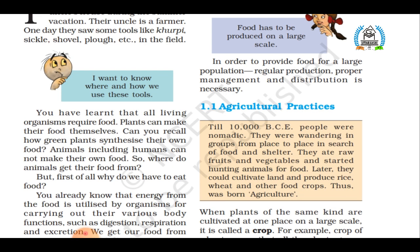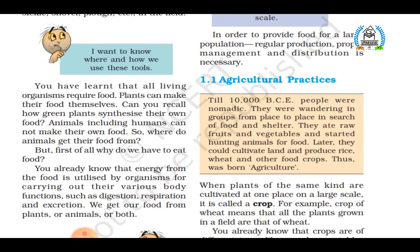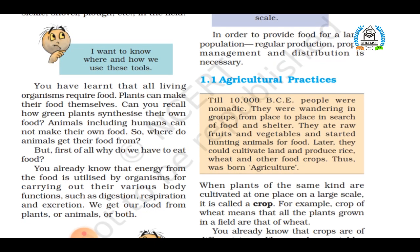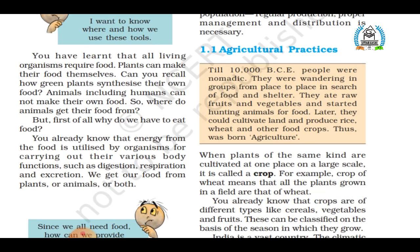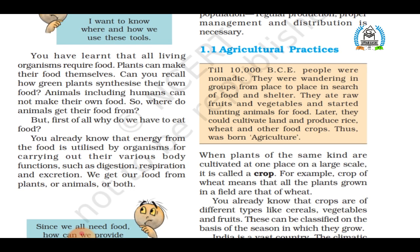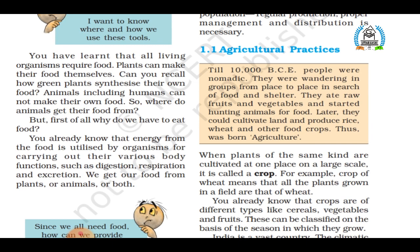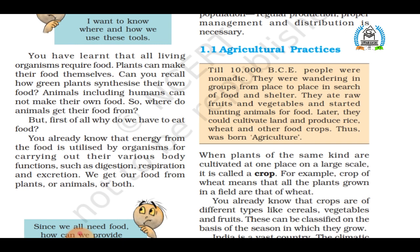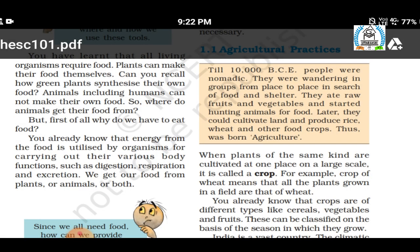The next term is crop. When plants of the same kind are grown and cultivated at one place on a large scale, it is called a crop. When we plant the same kind of plant in a particular field on a large scale, we can say it is a crop — for example, a crop of wheat.